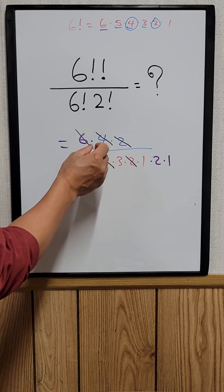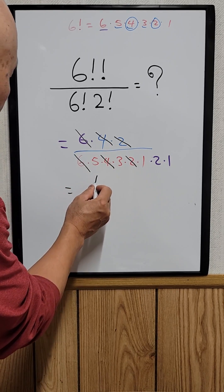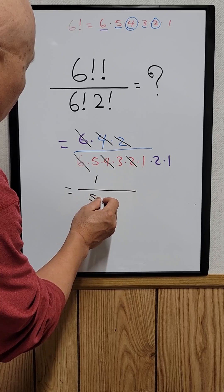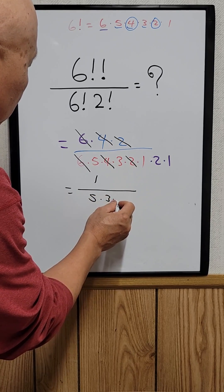So all you have is the top one is equal to one over five times three times two times one times one.